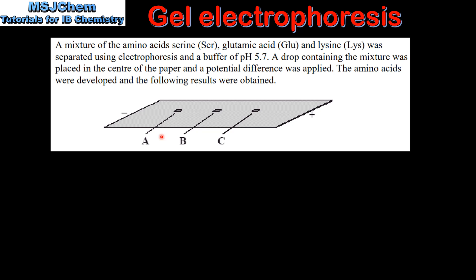We can see that amino acid A has moved towards the negative electrode, amino acid C has moved towards the positive electrode, and amino acid B has not moved in the electric field. Next we will identify amino acids A, B and C.